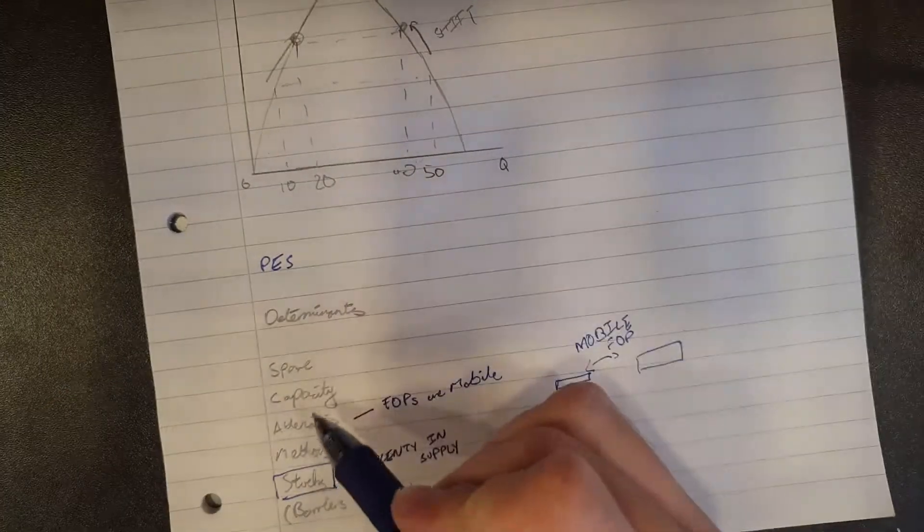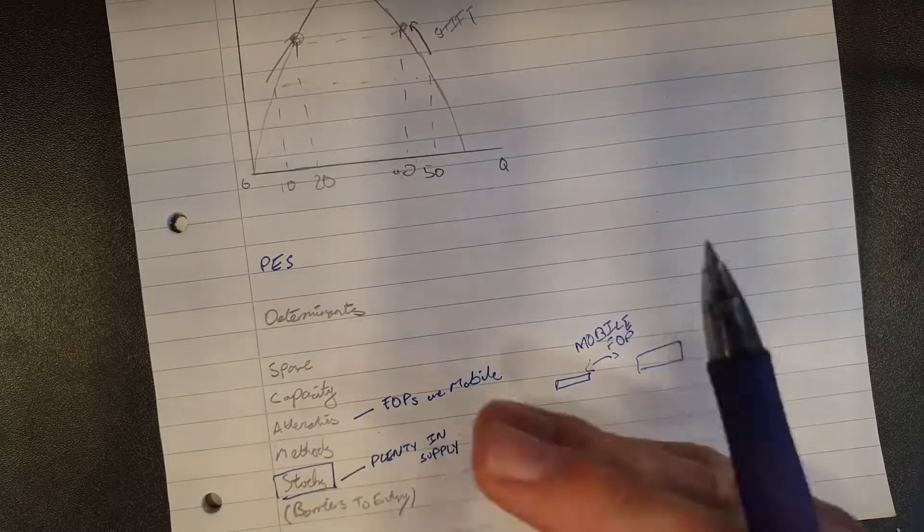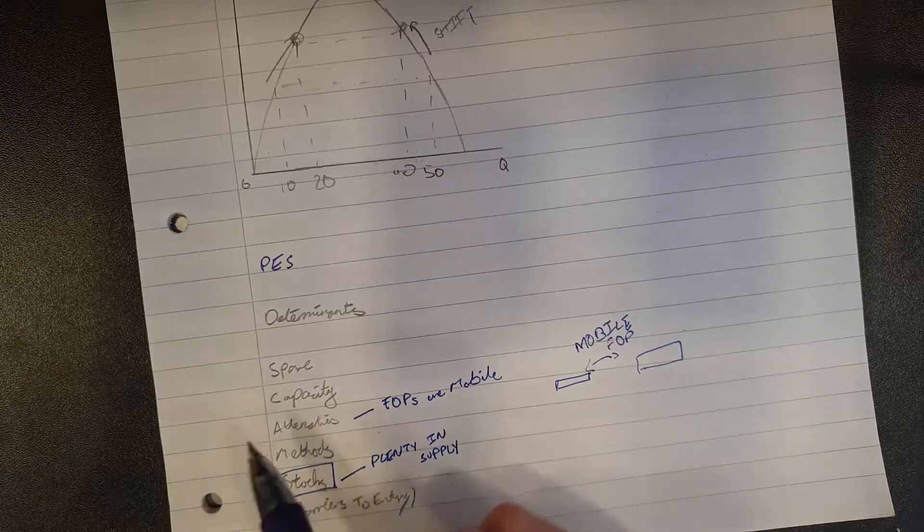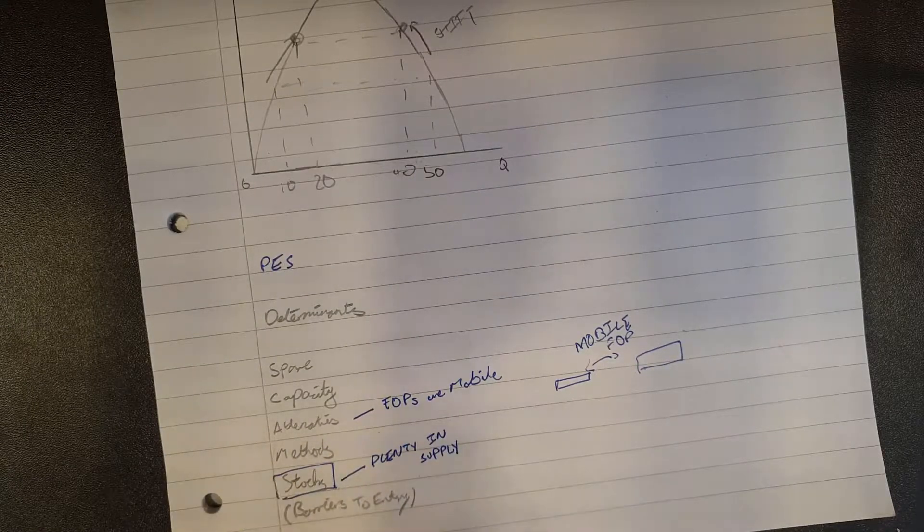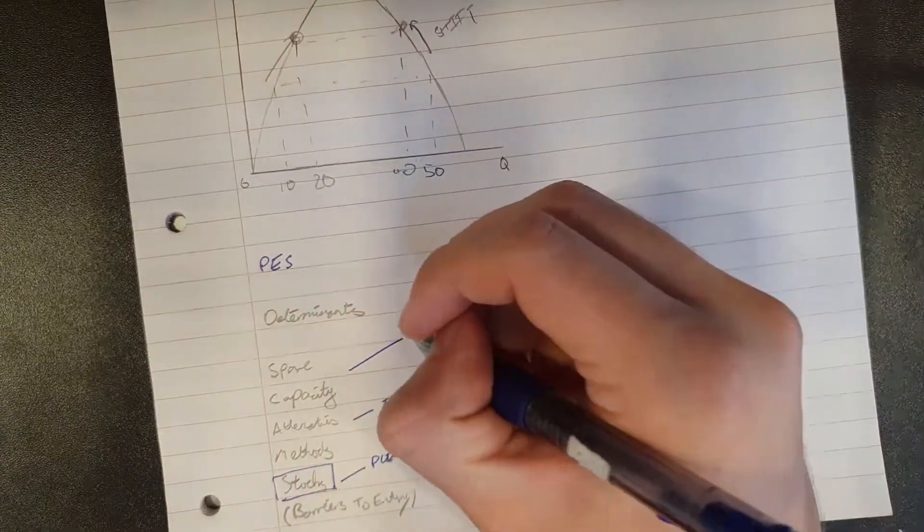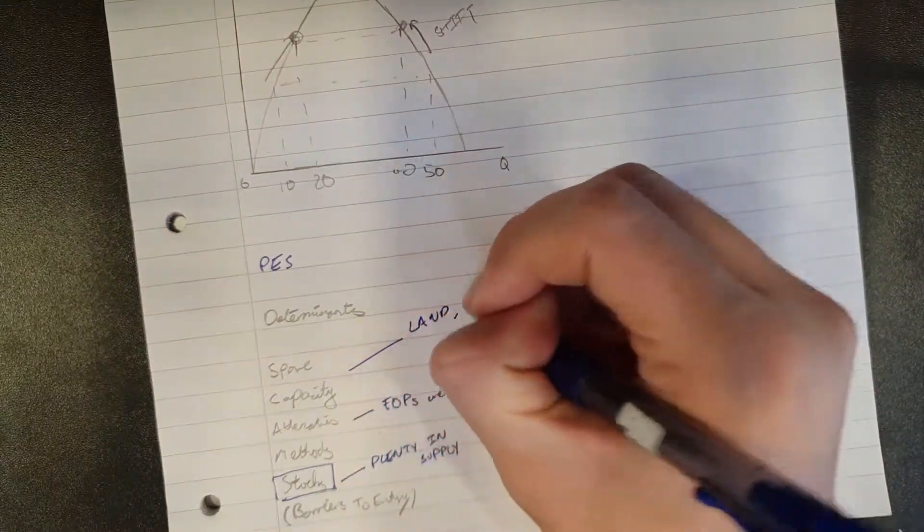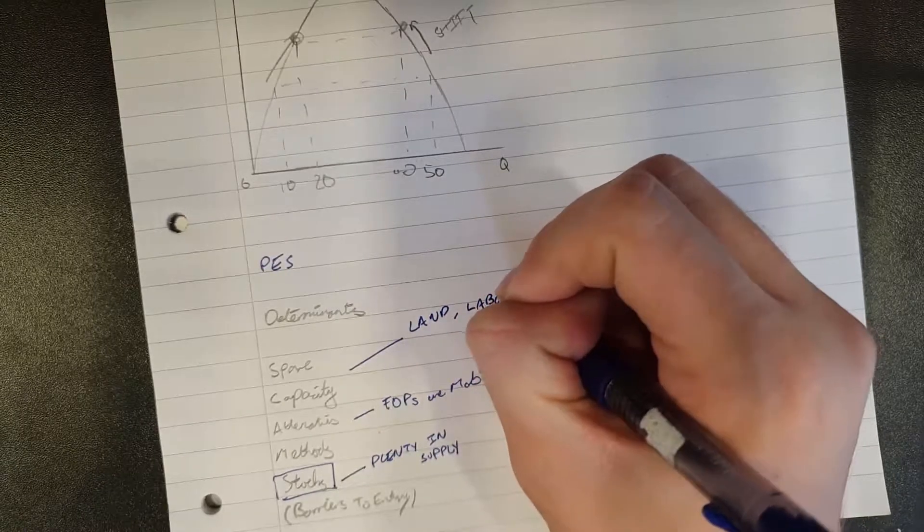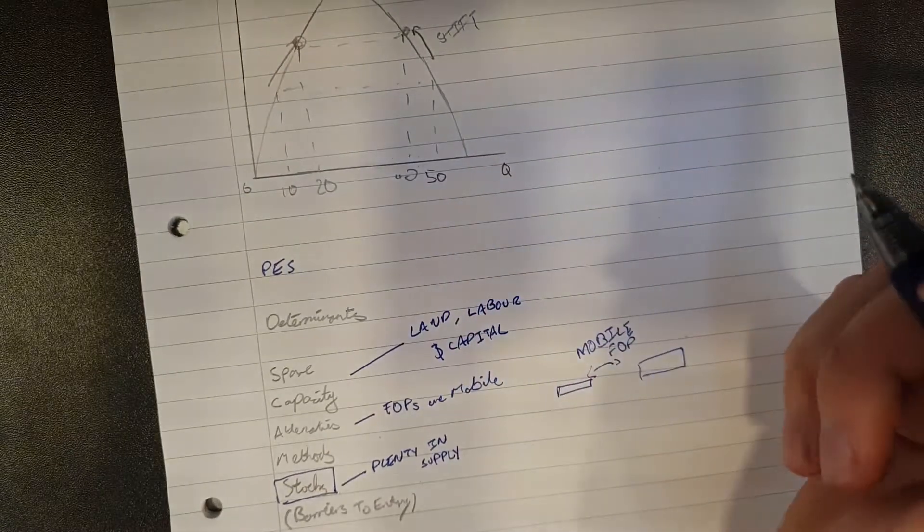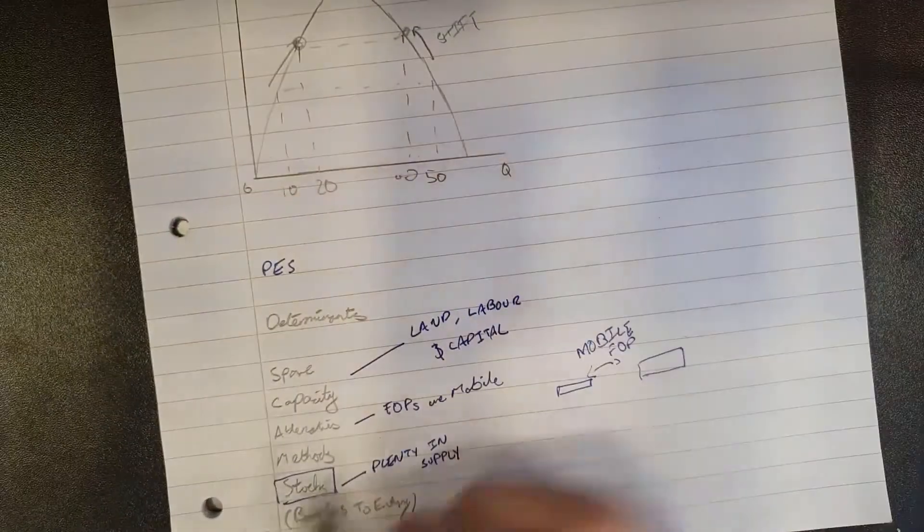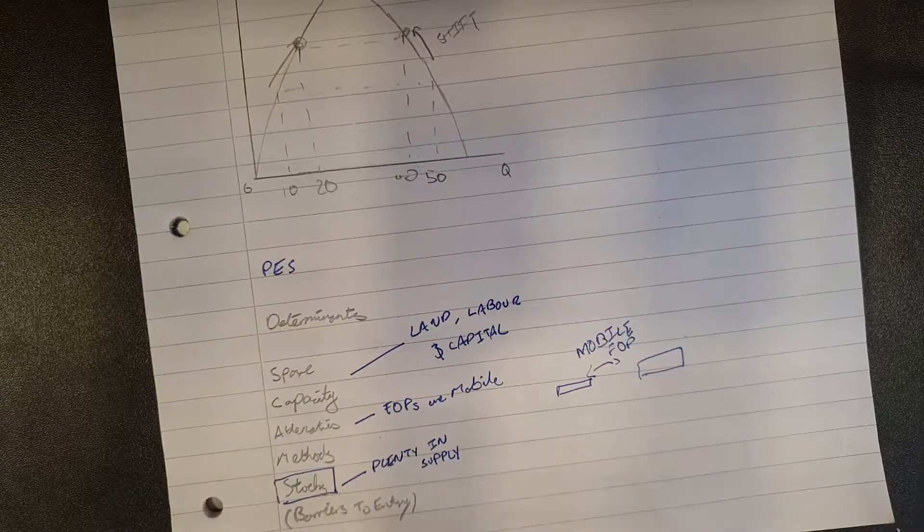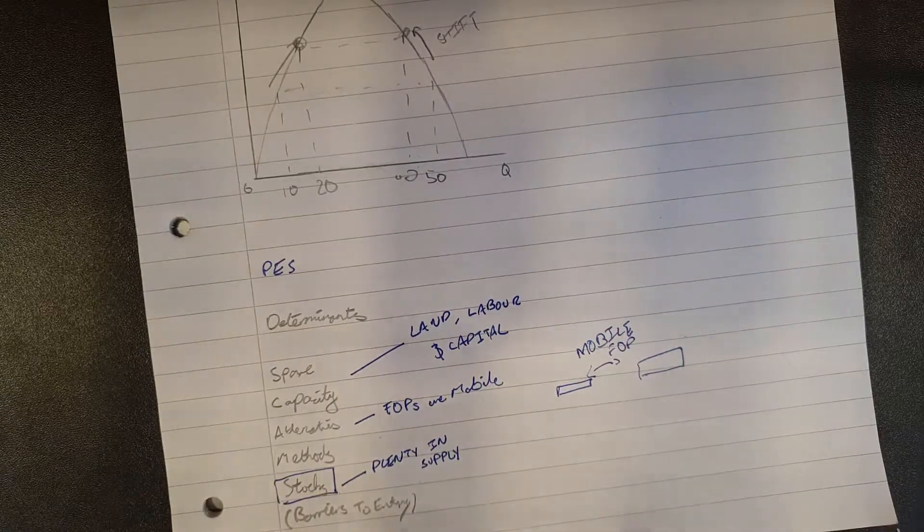Now, spare capacity. We know from the law of diminishing marginal returns that just increasing one factor of production incrementally while leaving the others fixed leads to increasing marginal costs. So for this one, it's best to have land, labour and capital all in spare capacity. So we can just expand proportionally with all our factors of production and not lose efficiency along the way while increasing production.